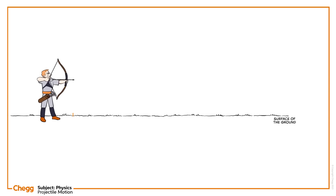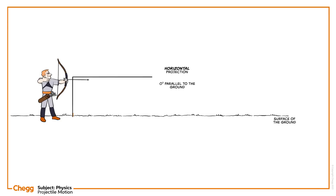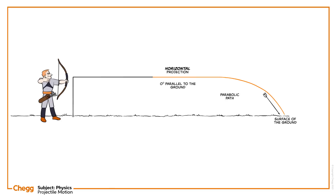When the object is projected at 0 degrees relative to the surface of the ground, parallel to the ground, the scenario is called horizontal projection. In this projection, the object follows a parabolic path while falling onto the Earth's surface.